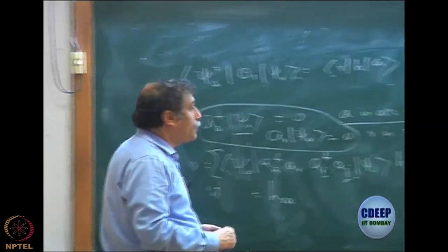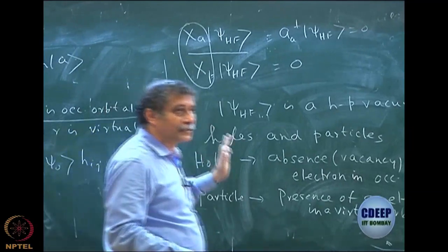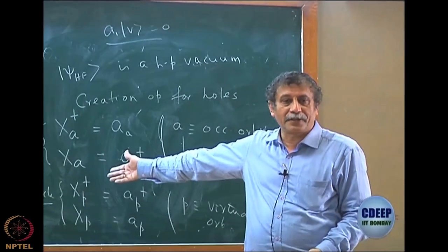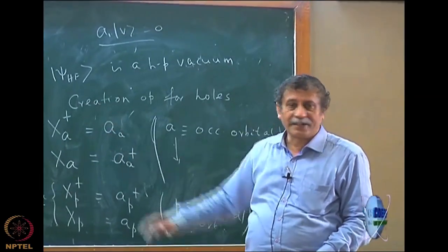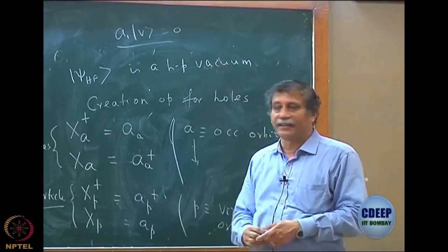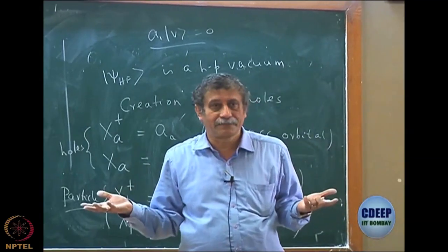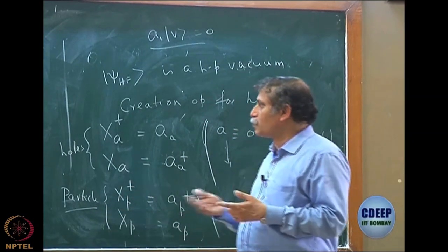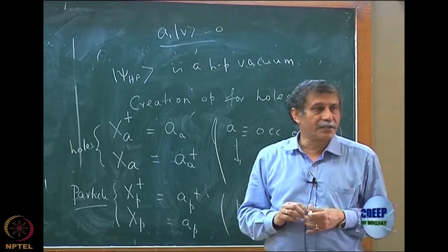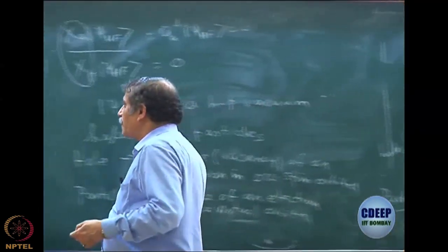It is not a vacuum in terms of normal electron creation operators, but it is a vacuum in terms of hole creation/annihilation or particle creation/annihilation. From this vacuum I can only create — either create a hole or create a particle. Previously when doing this problem, I had to physically remember that a_a dagger psi_0 equals 0 because a was an occupied orbital. If I use this hole-particle description, I do not have to remember; I just bring regular annihilation operators to the right, and automatically I will ensure that the results are correct.